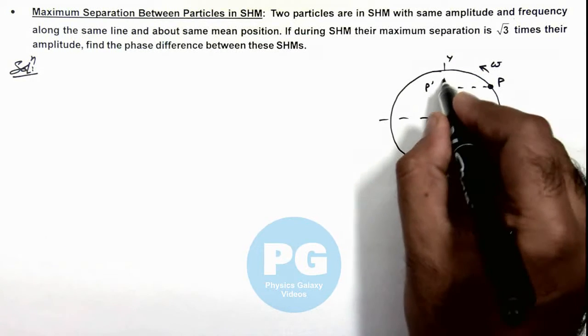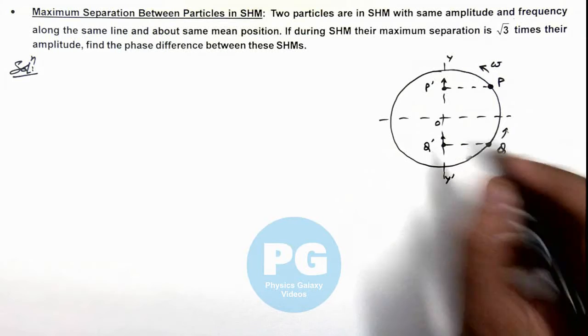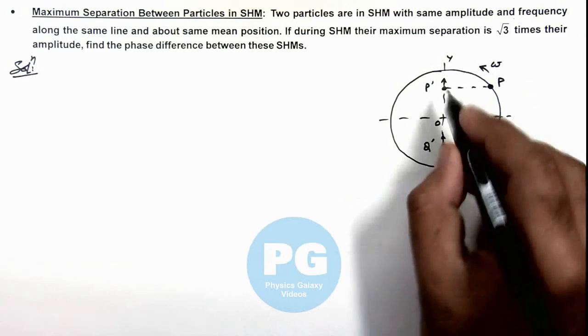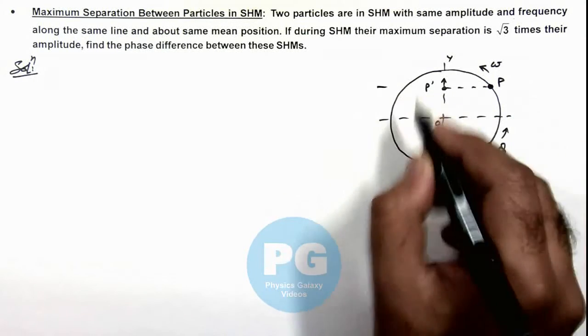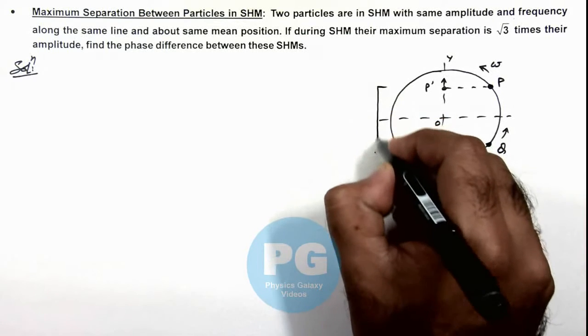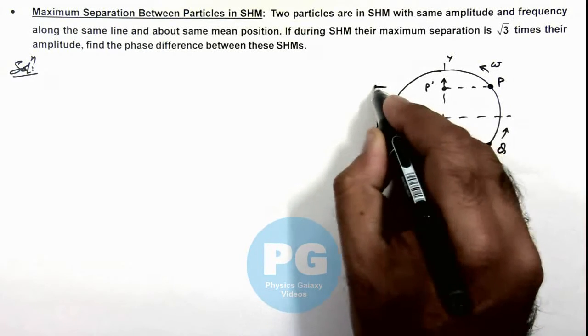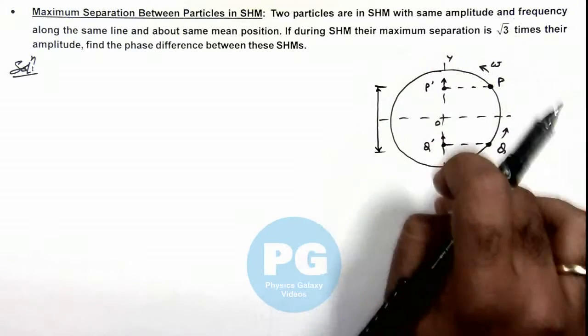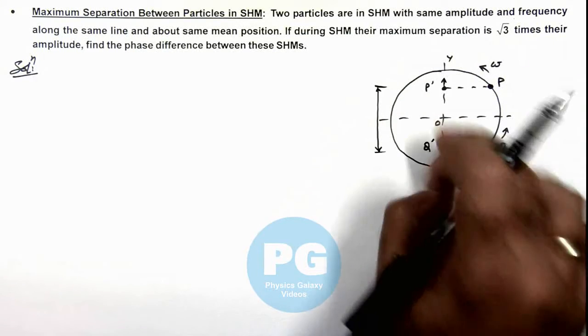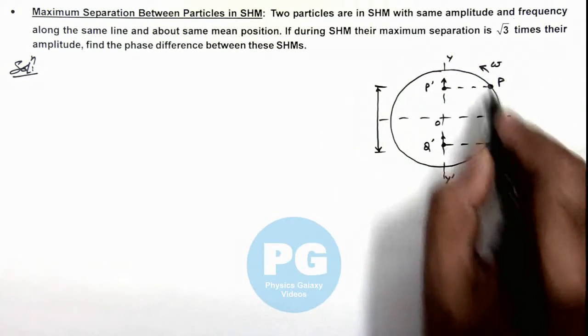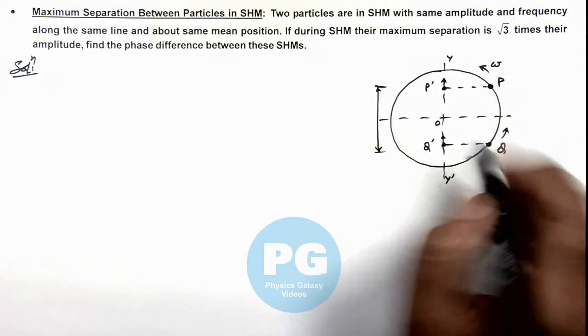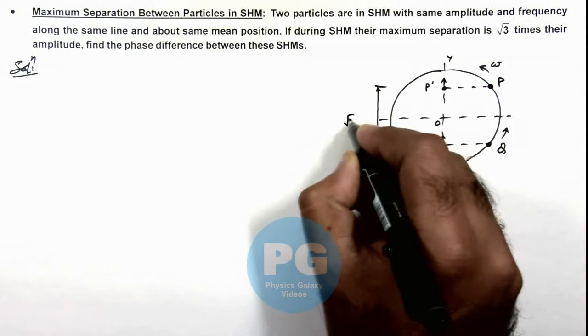Here you can see this P and Q projections are moving in same direction, and you can see the separation between the two we can write here this is maximum. Because at any other position, the separation between P prime and Q prime which are executing SHM would be less than this value, because this is the actual separation between the reference particles P and Q, and we are given this is equal to root 3 A.